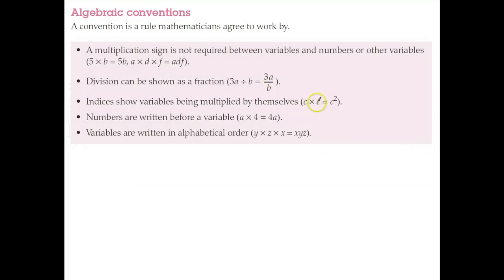If we're going to multiply a variable by itself, like c times c, we generally prefer to use indices. So rather than writing cc or c times c, we write it as c squared. If we had c times c times c, we'd write it as 3 to the power of 3 and so on.